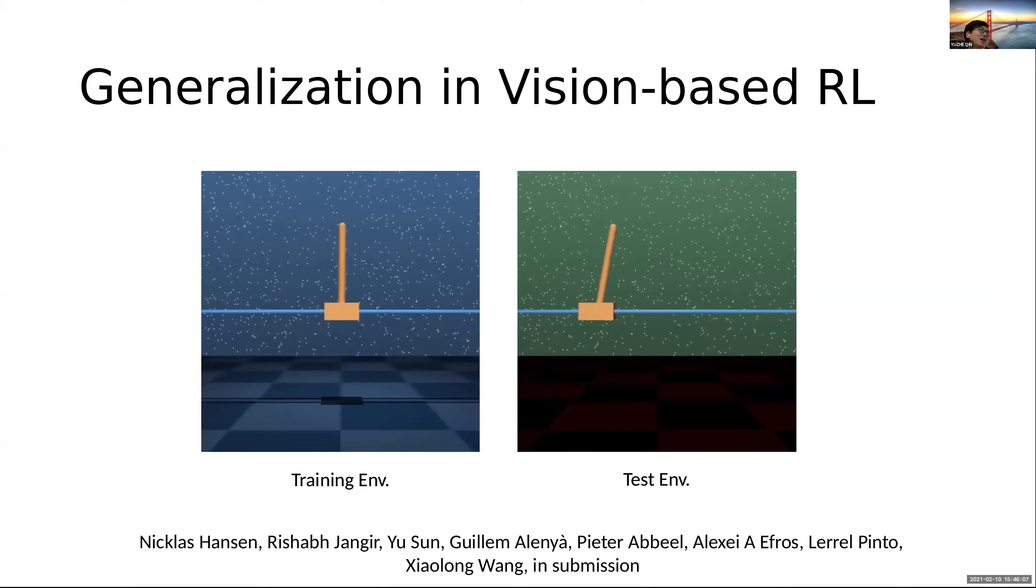And also, beside the imitation learning, another important interaction is through the generalization of reinforcement learning. So we know that reinforcement learning is a very strong optimization tool, but how can reinforcement learning generalize to different environments is still a question. So here is a research work for Professor Wang that uses vision-based RL to explore how to generalize to different visual images with a trained policy.